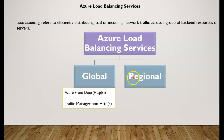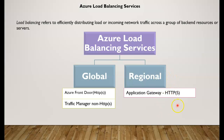Now let's jump into the regional options. The regional option is the Application Gateway, which can be used as an Application Delivery Controller — ADC as a service. It offers layer 7 based load balancing capabilities to optimize web application productivity, including offloading CPU-intensive SSL termination at the gateway layer.